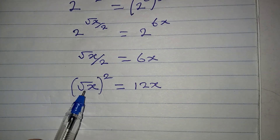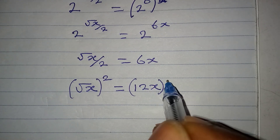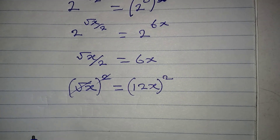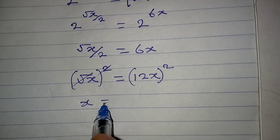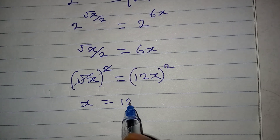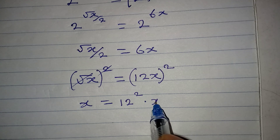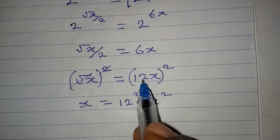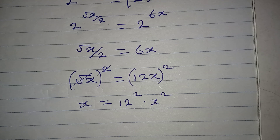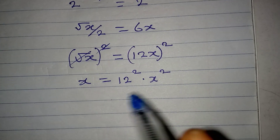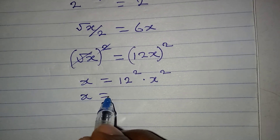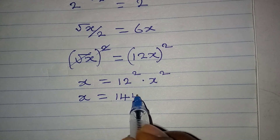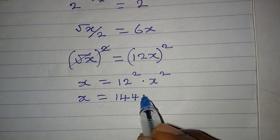We can take the square of both sides to eliminate the square root. Squaring both sides, the square root cancels, leaving x on the left. On the right, we get 12 squared times x squared. Since 12 squared is 144, we have x equal to 144x squared.